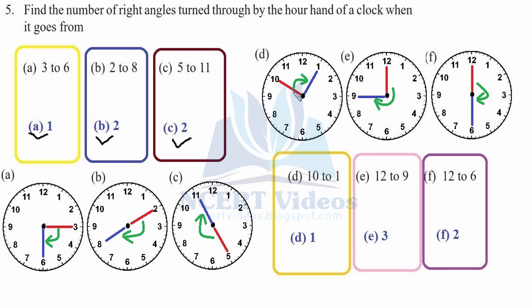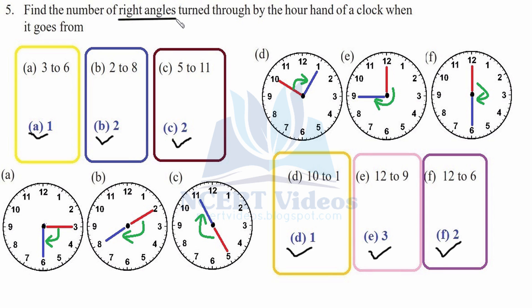Part e: from 12 to 9 — from 12 to 6 is half the revolution or two right angles, plus one more right angle, giving three right angles total to go from 12 to 9. Part f: from 12 to 6 — half of the rotation means two right angles. That completes question number 5.